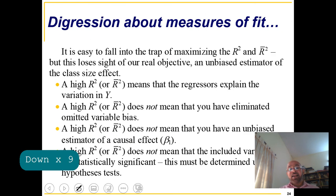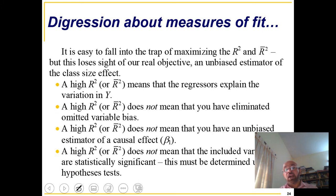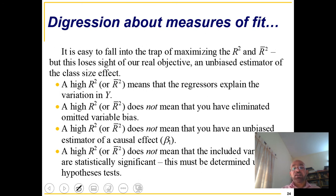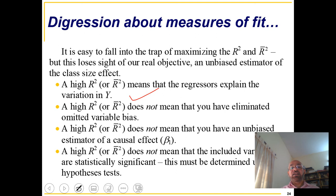A slight digression: high R-squared means only that x variables have good explanatory power for y — nothing more, nothing less. As long as the objective is forecasting, high R-squared is fine. But high R-squared does not mean there is no omitted variable bias, does not mean your coefficient of interest is unbiased, and does not mean included variables are statistically significant.